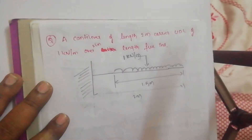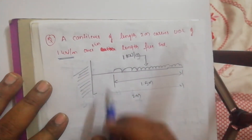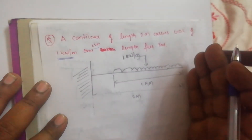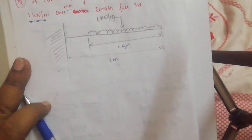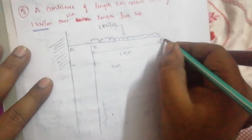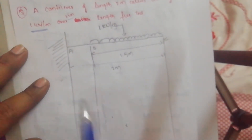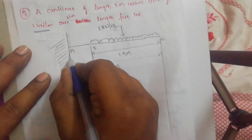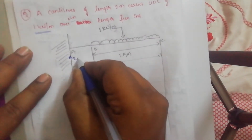The problem states: a cantilever beam of length 2 meters carries a UDL of 1 kilo Newton per meter over 1.5 meter length from the free end. I have drawn the diagram accordingly. Keep the entire page available for shear force and bending moment calculations. I am naming the points: this is point A, this is point B, and this is point C. Where the beam is fixed, you will have a vertical reaction as well as a horizontal reaction.